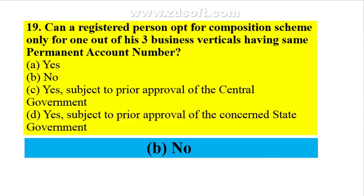Can a registered person opt for composition scheme only for 1 out of his 3 business verticals having the same PAN (permanent account number)? No — he cannot opt for composition scheme for only one vertical. All other business verticals must also be registered under the same scheme.